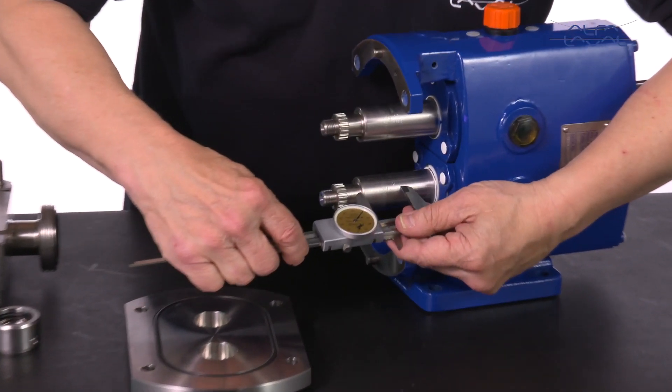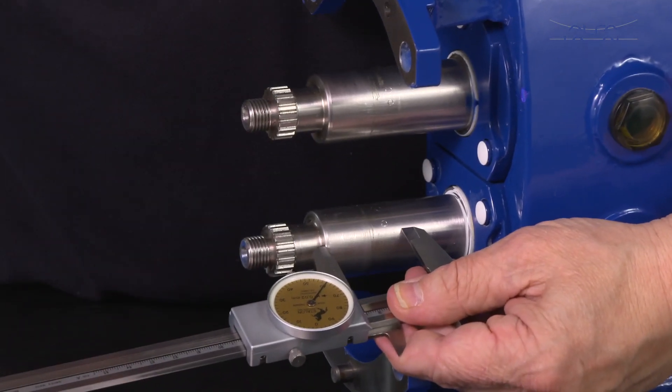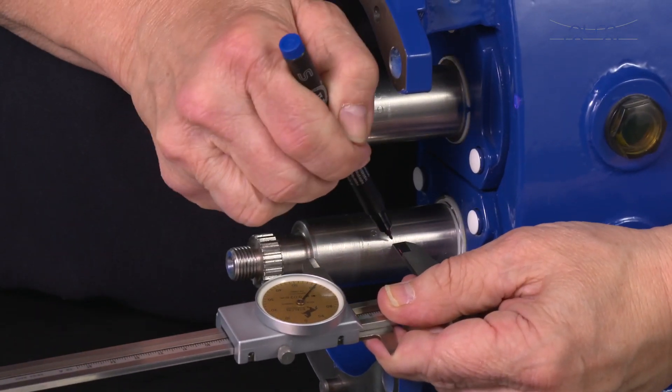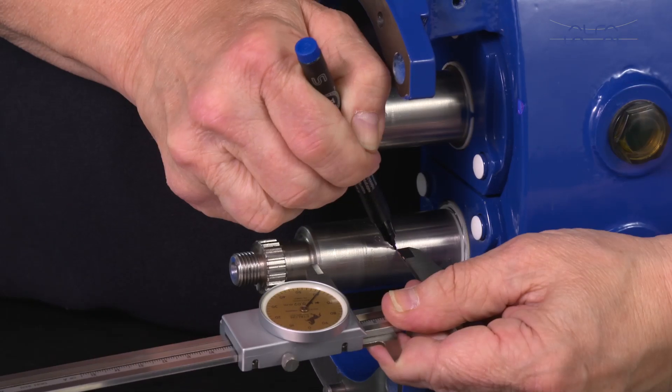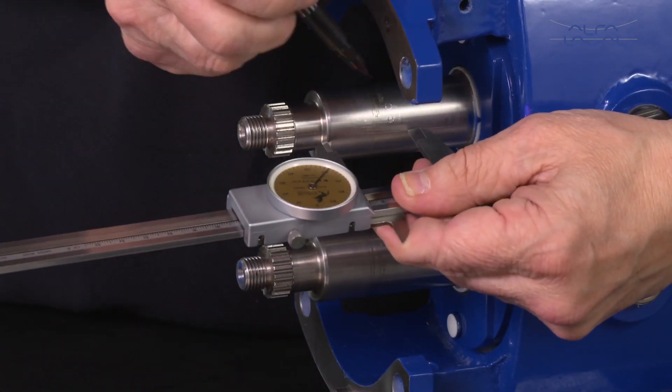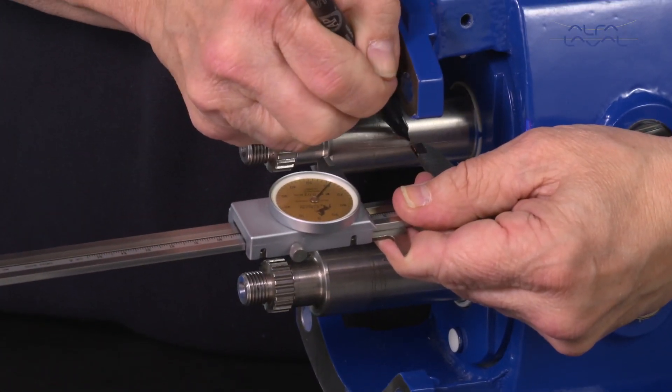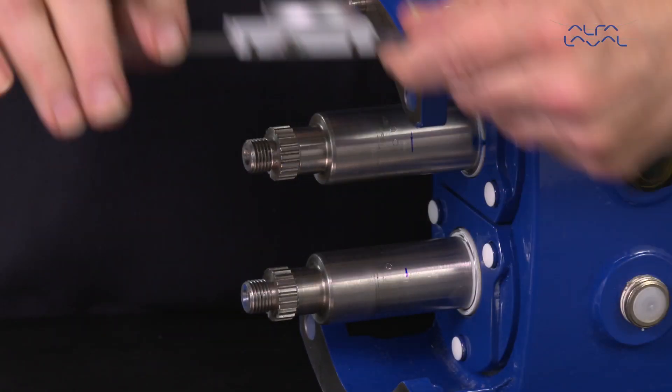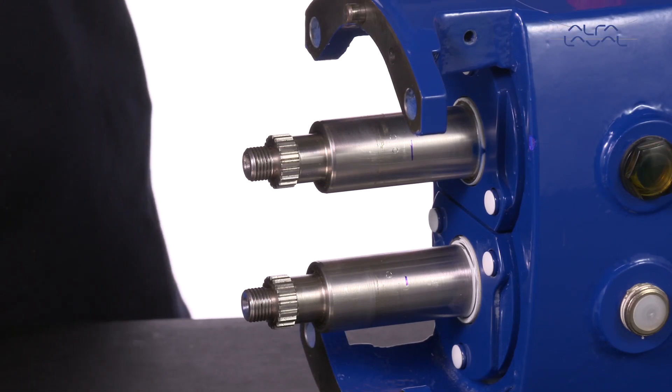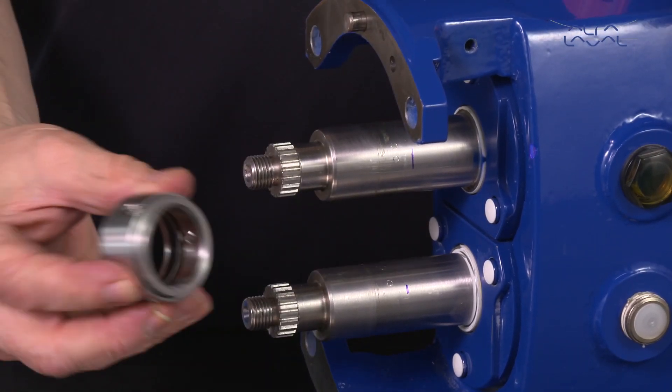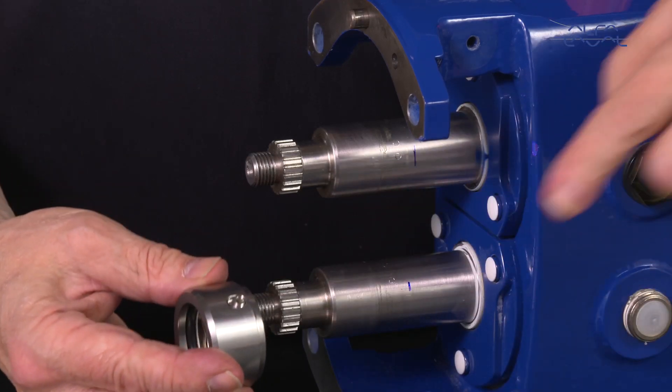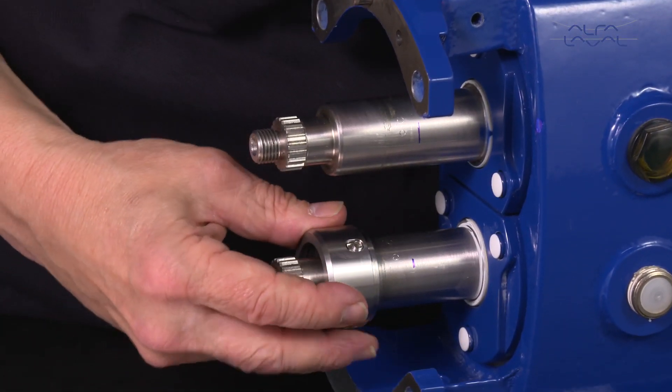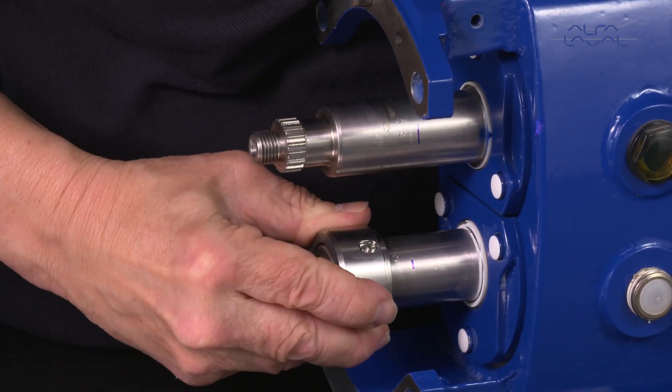Mark the shaft to indicate the seal setting length, shown in the table in the instruction manual. Slide the rotary seal assembly onto the shaft until it is aligned with the mark indicating the seal setting length.